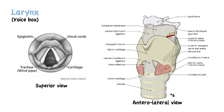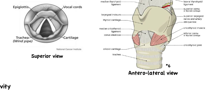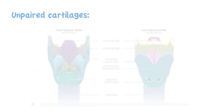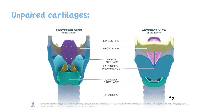The cartilages that compose the larynx may be divided into paired and unpaired cartilages. The unpaired cartilages are the thyroid cartilage, depicted in blue, which is most easily visible in adult males as it forms the laryngeal prominence, or Adam's apple; the cricoid cartilage, depicted in green; and the epiglottis, depicted in purple.